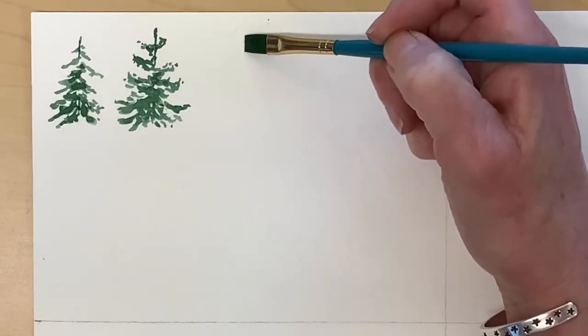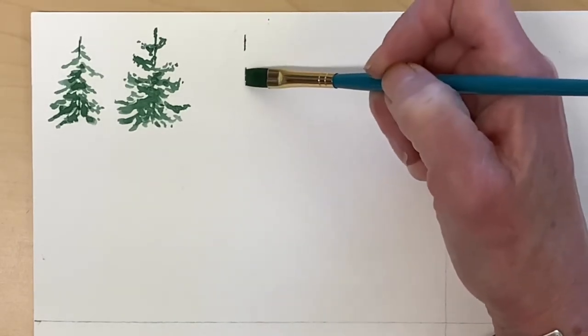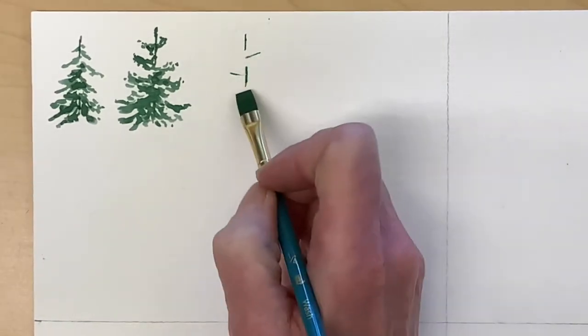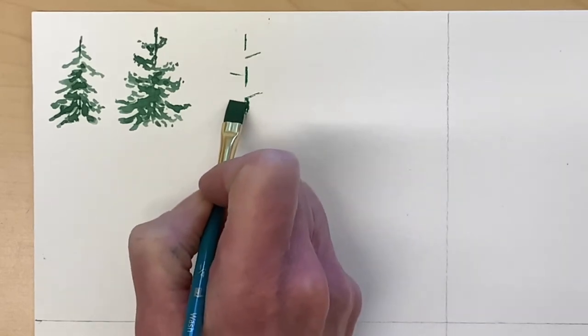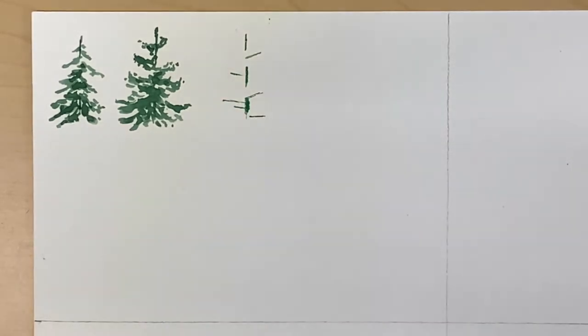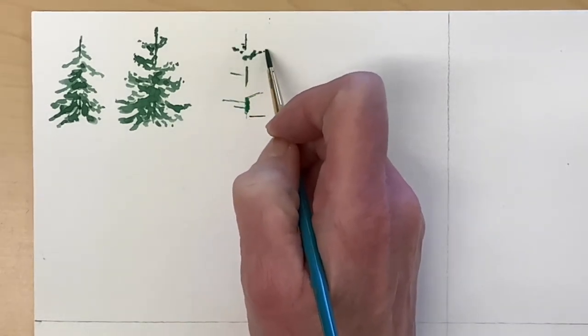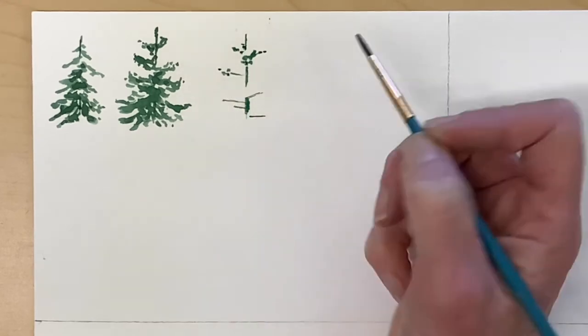Next I'll show you how to use your flat brush to add some branches. I'm using the quarter inch, just making a few branches here and there. And then my number one detail brush to add details.